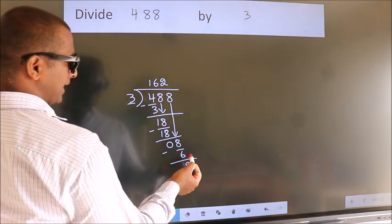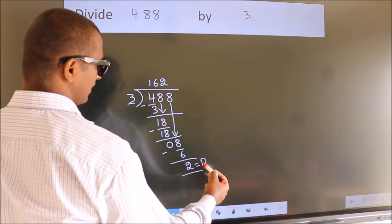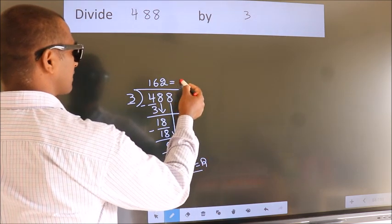No more numbers to bring it down. So, we stop here. This is our remainder. This is our quotient.